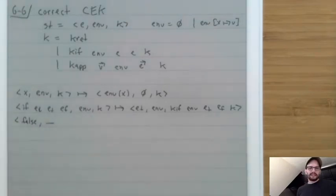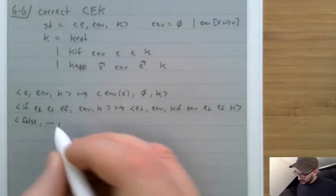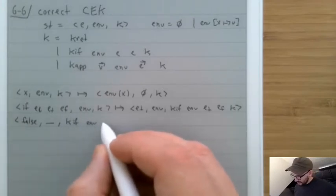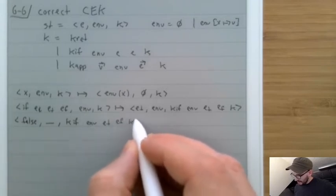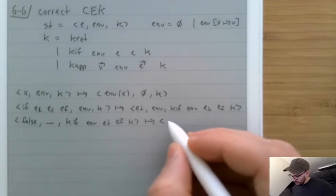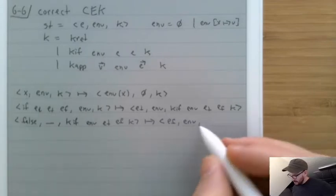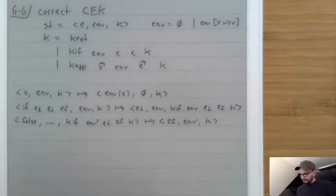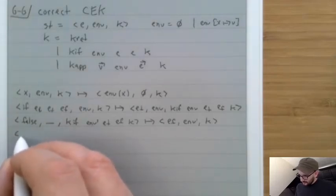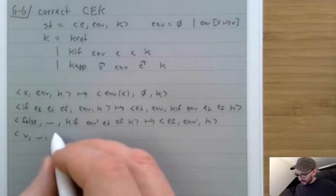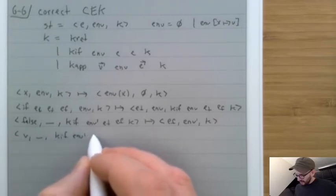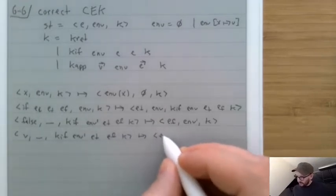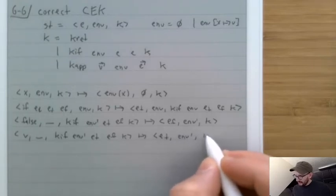For the if rules: if EC, ET, EF with environment and K, focus on EC with that environment, construct KIF storing the current environment, ET, EF, and K. When we reach false, ignore the current environment; use the KIF's saved environment to focus on EF. When we reach any other value, use the saved environment to focus on ET.